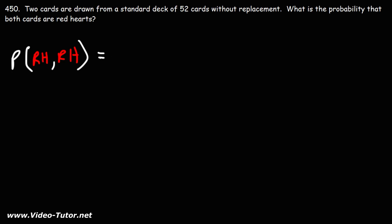So, let's find the probability of getting a red heart on the first try. There's 52 cards, and 13 of them are red hearts.